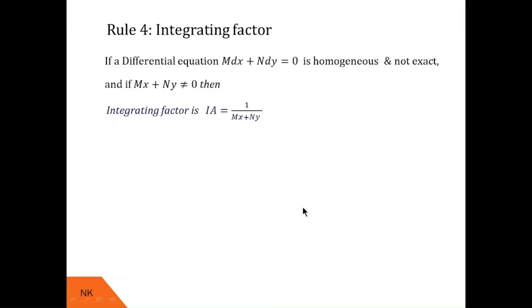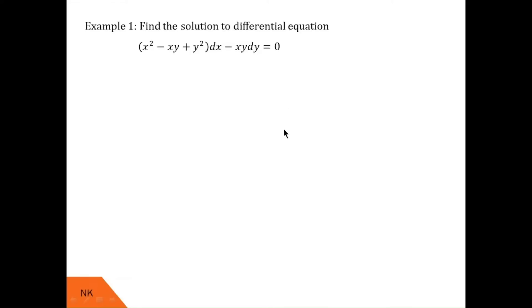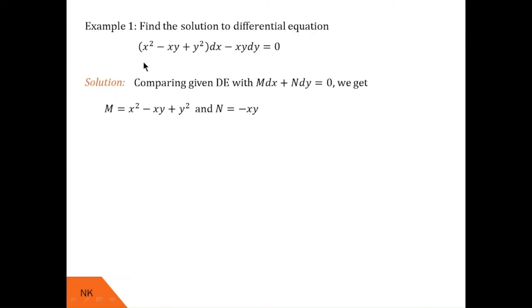Let us see some real examples. The question is to find the solution to a differential equation given by (x² − xy + y²) dx minus xy dy equals 0. First of all, we will check whether this differential equation is exact or not. We compare it with M dx plus N dy equals 0 and recognize M and N. Here, M is x² − xy + y² whereas N is −xy.